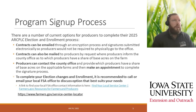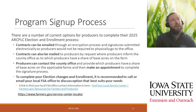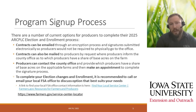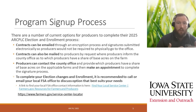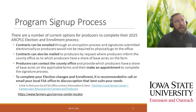For the program signup process, there are a number of options when completing your 2025 ARC PLC election and enrollment. Our county offices are equipped to email all contracts to you, or they can be mailed. Producers can also contact the county office to make an appointment, which we prefer because that way we can have a conversation at the counter, answer questions, and make sure that all payment limitation eligibility information is up to date and correctly loaded in our offices.